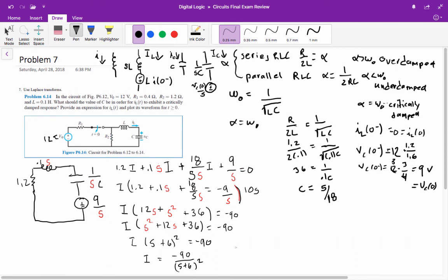So the inverse Laplace transform of this will give us I equals negative 90 T E to the negative sixth T. And that's our answer. Now we're supposed to plot it. While you would not have to do this on the exam, it's still a good idea to know how to do that. So we'll do that and see what it looks like.